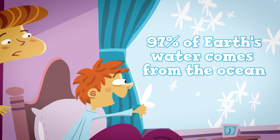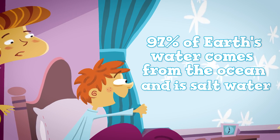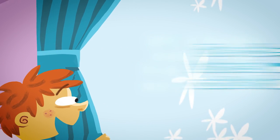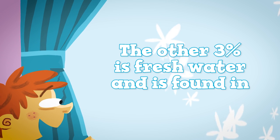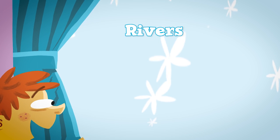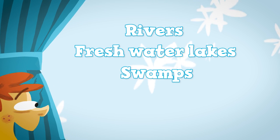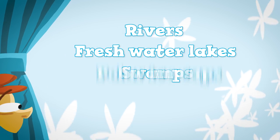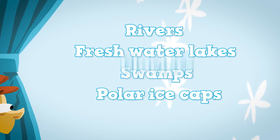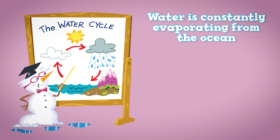97% of Earth's water comes from the oceans and is salt water. The other 3% is freshwater and is found in rivers, freshwater lakes, and swamps, as well as locked in frozen form within polar ice caps and glaciers. Water is constantly evaporating from the oceans,